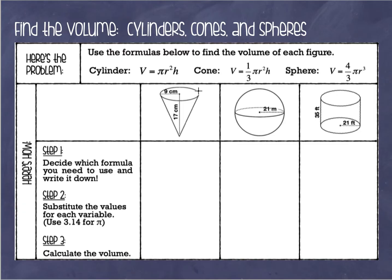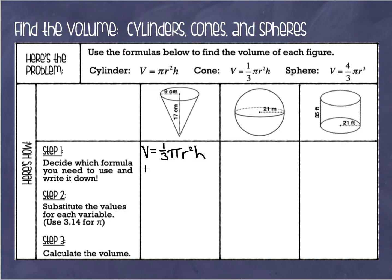Alright, so this first problem — when I look at this, I need to decide which formula to use. This reminds me of an ice cream cone, which means it is a cone. So I'm going to copy down this formula: volume equals one third times pi times the radius squared times the height. From here we are going to substitute values and we're going to use 3.14 for pi.